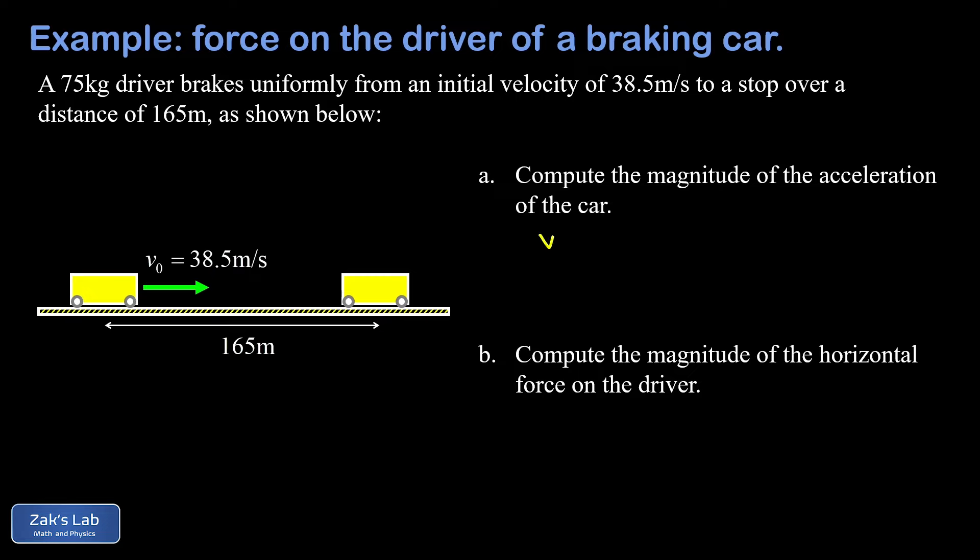We're going to use the time-independent kinematics equation: v² = v₀² + 2a(x - x₀). Now we can either just sub in the displacement of 165 meters, or we can put an origin at the initial position and say that x₀ is equal to zero and x final is 165. Either way you get the same thing.